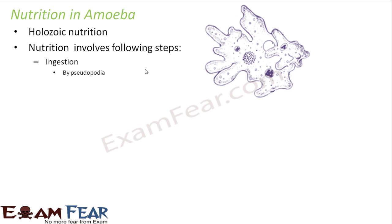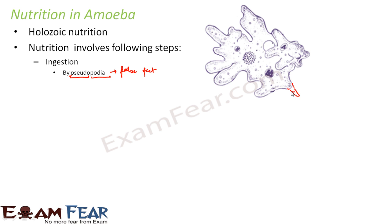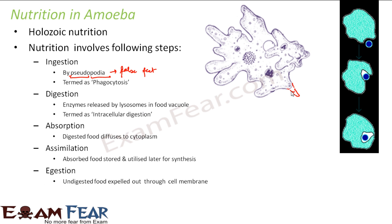The first step is ingestion, that means intake of food. For ingestion, amoeba uses pseudopodia. Pseudo means false and podia means feet, so pseudopodia means false feet. It is nothing but a temporary extension of the cytoplasm. The cytoplasm of amoeba extends — wherever there is a food particle, the cytoplasm will extend and enclose the food. This process is known as phagocytosis.